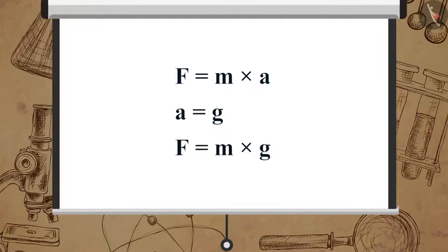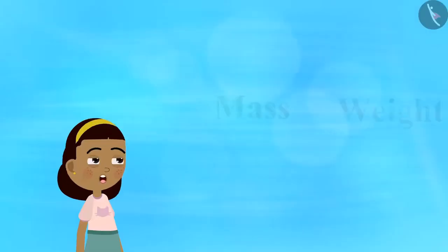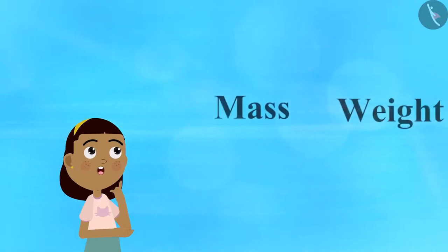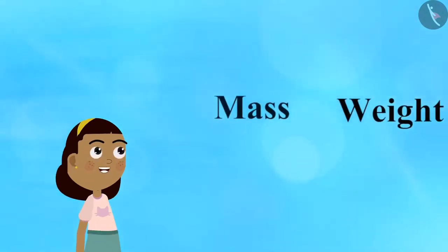Therefore we can say F is equal to M multiplied by g. Denoting the weight by W, we can write the equation as W is equal to M multiplied by g. Mass and weight are two different properties of an object.